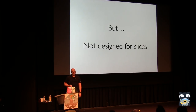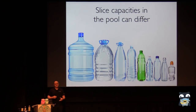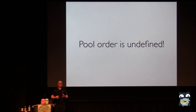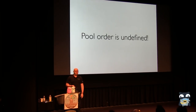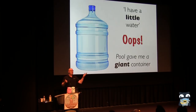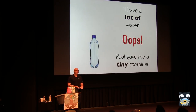But sync.Pool is not designed for slices, and this has some interesting effects. It's not size-aware — a slice could be very big or very small, giving you containers with very different sizes. The pool doesn't know anything about the size of the things inside it, so the capacities in the pool will differ. Pool order is undefined — the documentation says don't assume you get out the thing you put in or in any particular order. There are per-CPU caches going on, so when you put a container of a certain size in, you don't know that's the next thing you're getting out.